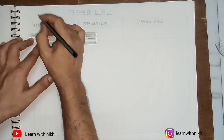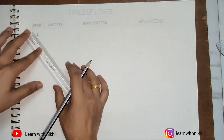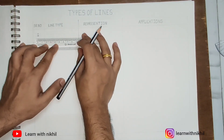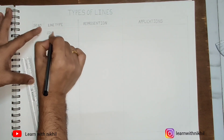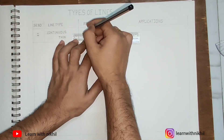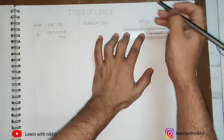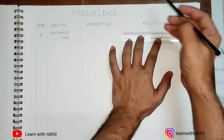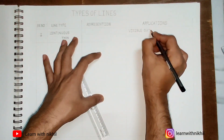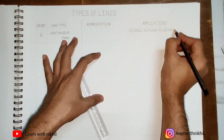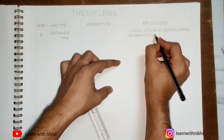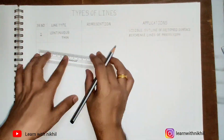The first type of line we will study — as you can see I am drawing parallel lines at a height of 0.5 centimeters. The first is the continuous thin line. It is a thin line used for a visible outline of a section surface, and mostly used as a reference line or lines of projection.